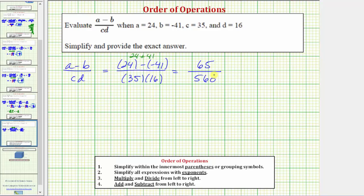And now we need to simplify the fraction as much as possible by simplifying out all the common factors other than one between 65 and 560. Because 65 ends in a five and 560 ends in a zero, we should recognize they have a common factor of at least five. To show the common factor of five, we can write 65 as five times 13.